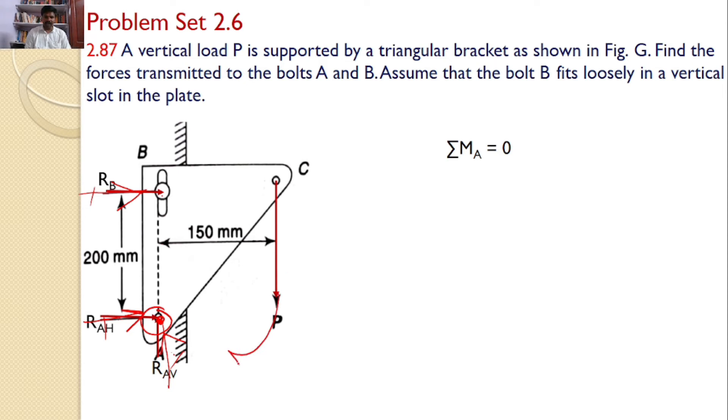P will create a moment in the clockwise direction and RB will also create a moment in the same direction, that is, clockwise direction. The line of action of P is at a distance of 150 from point A and the line of action of RB is at a distance of 200 from point A. Hence, I can say RB times 200 plus P times 150 equals 0.